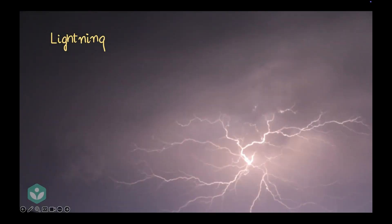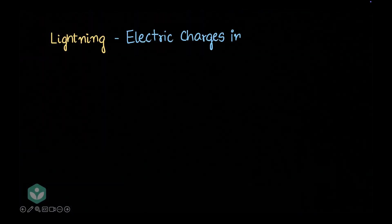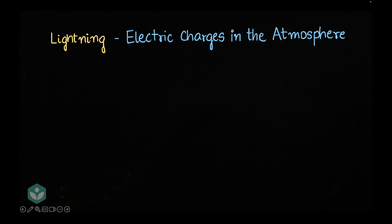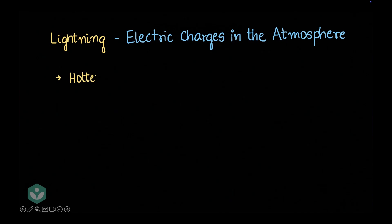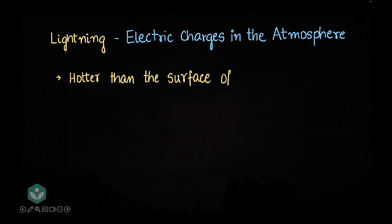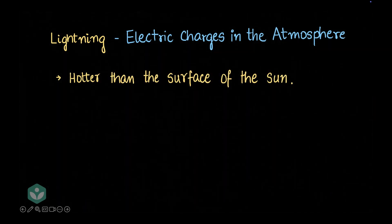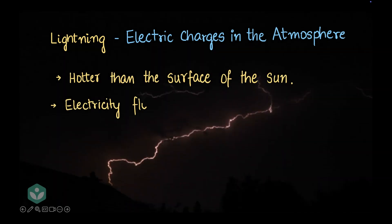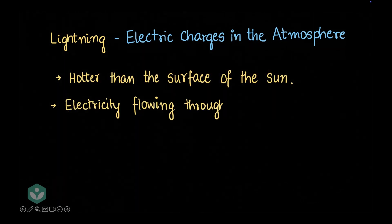In this video we'll discuss about lightning. Lightning occurs due to electric charges in the atmosphere. Lightning is hotter than the sun, and it is literally electricity flowing through the air.